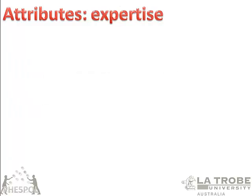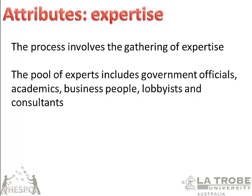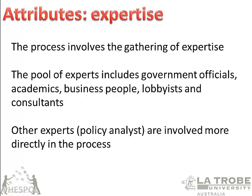The second attribute of policy is expertise. The process of developing policy priorities, goals, and tools involves gathering of expertise from a pool that includes government officials, academics, business people, lobbyists, and consultants. And the great absent from this list, of course, is the community — and maybe you want to think about what it means that Colbatch does not mention the community as an expert. Policy analysts — people who make it their daily occupation — are more directly involved in shaping policy, thinking about different options and providing the evidence. Later in the subject we will talk about expertise and evidence and how that is used or not used in policy development.